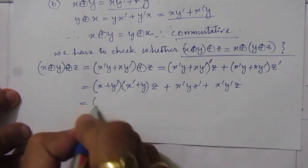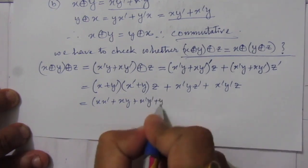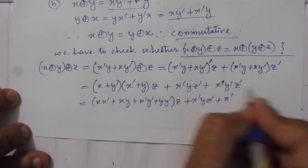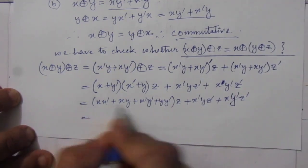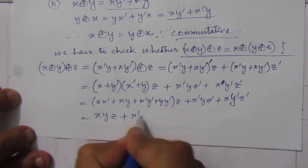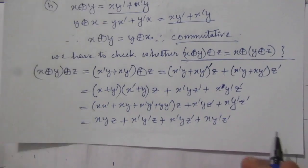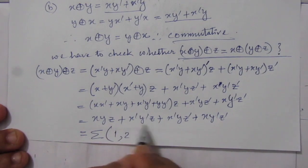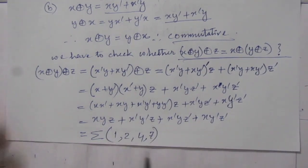Expanding further: (x·x̅ + x·y + x̅·y̅ + y·y̅)·z + x̅·y·z̅ + x·y̅·z̅. Since x·x̅ = 0 and y·y̅ = 0, this simplifies to (x·y + x̅·y̅)·z + x̅·y·z̅ + x·y̅·z̅, giving x·y·z + x̅·y̅·z + x̅·y·z̅ + x·y̅·z̅. Expressed as a sum of minterms, this equals Σ(1, 2, 4, 7).